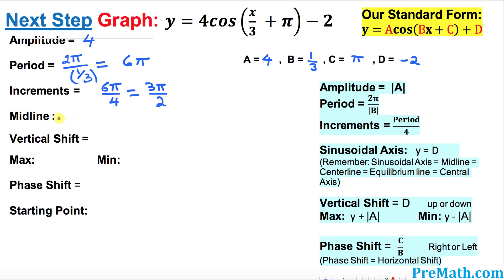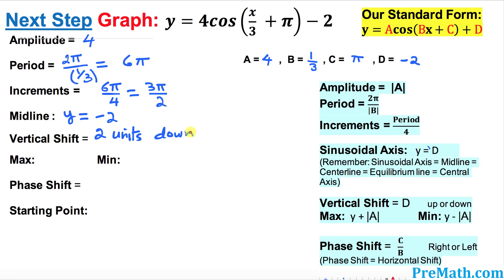Next is the midline. The midline is y equals to d. In our case, d equals to negative two, so y equals to negative two is our midline. The vertical shift is essentially the same thing — how many units it goes up or down. Since d is negative two, it's going two units down.